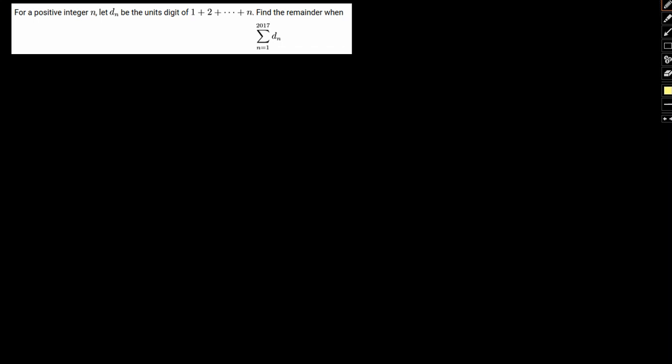Hello everyone, so in this video again we have a very interesting question for you pertaining to number system. Let's take a look. For a positive integer n, let d be unit digit of 1 plus 2 plus dot dot dot till n. Find the remainder when summation n equal to 1 to 27 till dn.